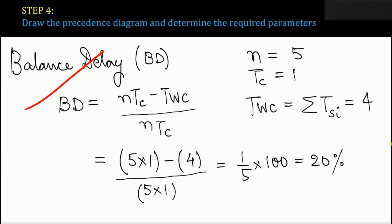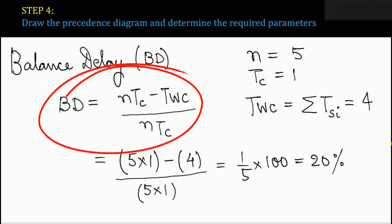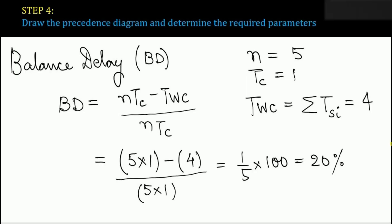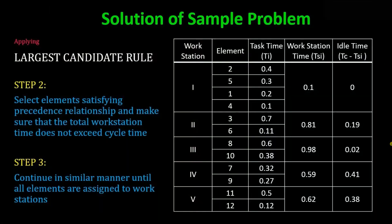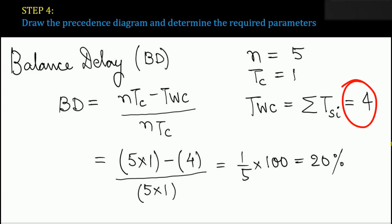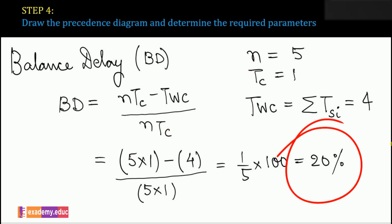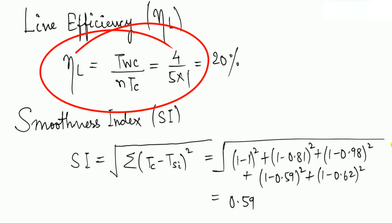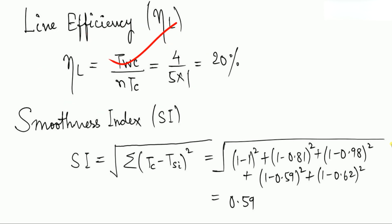Balance delay formula: BD = (n·Tc − TWC) / (n·Tc). Here n = 5 workstations, Tc = 1 minute, TWC = 1 + 0.81 + 0.98 + 0.59 + 0.62 = 4. So BD = (5·1 − 4) / (5·1) = 1/5 = 20%. Line efficiency = TWC / (n·Tc) = 4 / (5×1) = 80%.